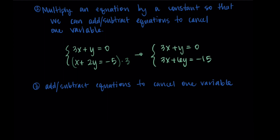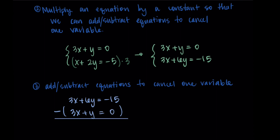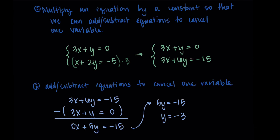Now we subtract one equation from the other to cancel a variable. I'll start with the second equation — 3x plus 6y equals negative 15 — and subtract the first equation: 3x plus y equals zero. Subtracting corresponding parts: 3x minus 3x gives 0x; 6y minus y gives 5y; negative 15 minus 0 gives negative 15. This leaves 5y equals negative 15, so y equals negative 3.